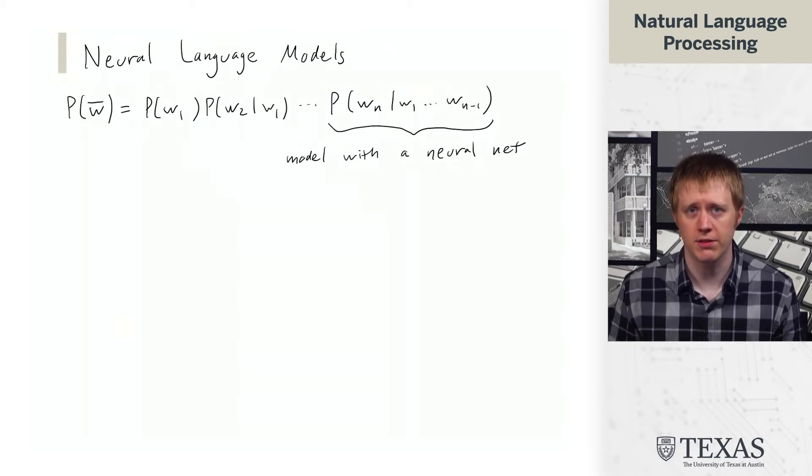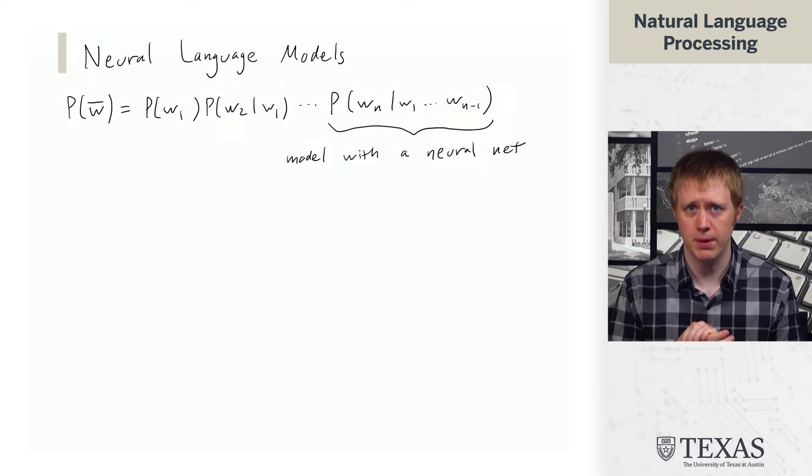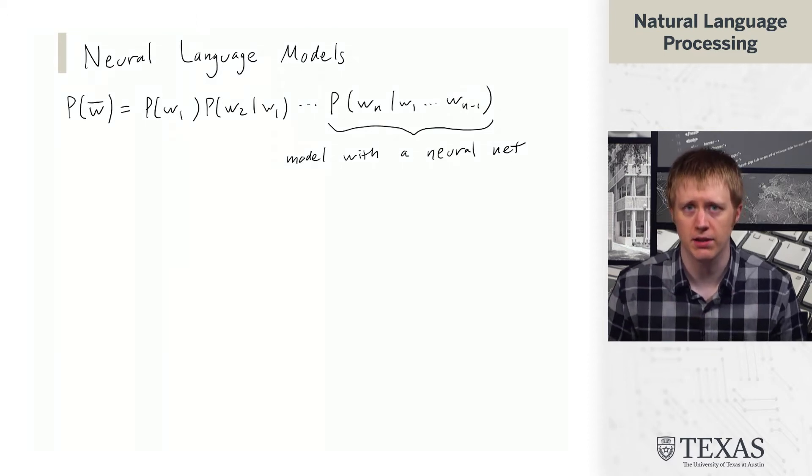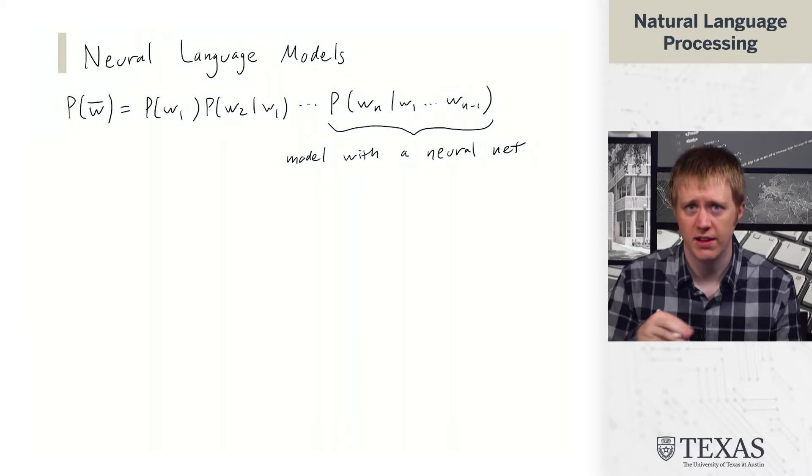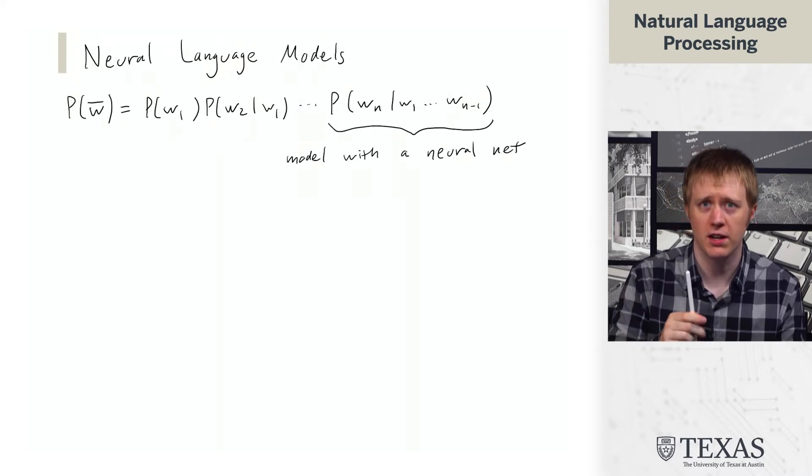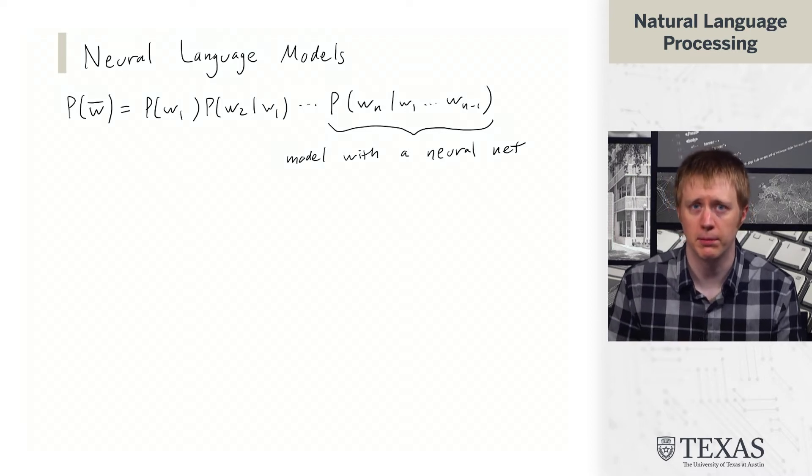In particular, rather than using these relative frequency counts that we had in the n-gram models, can we use a neural net to predict the next word conditioned on maybe more of the context than we were able to use before?